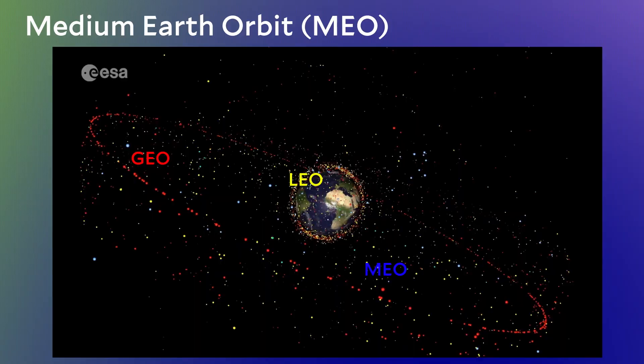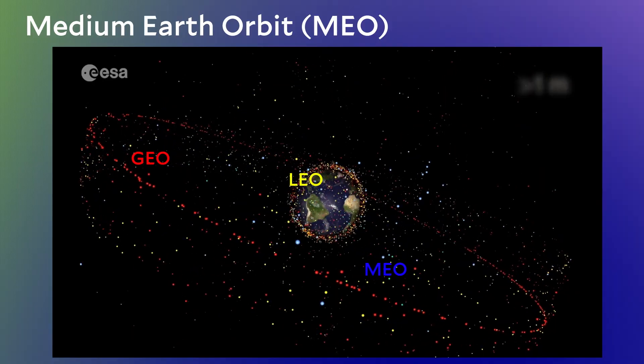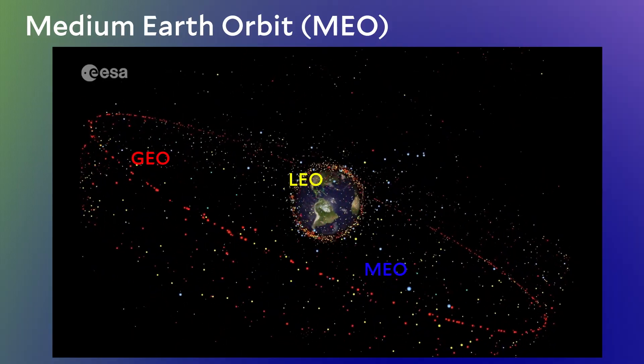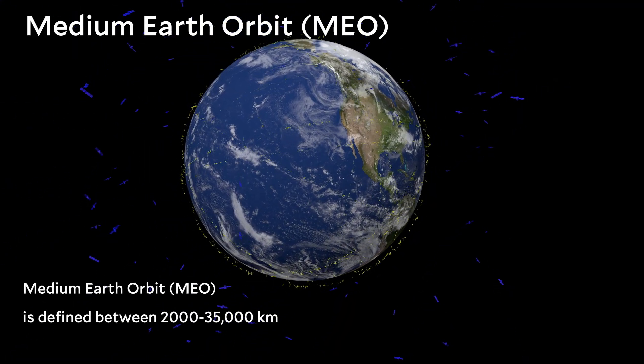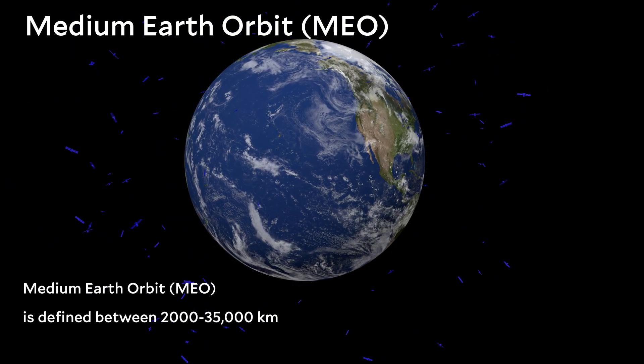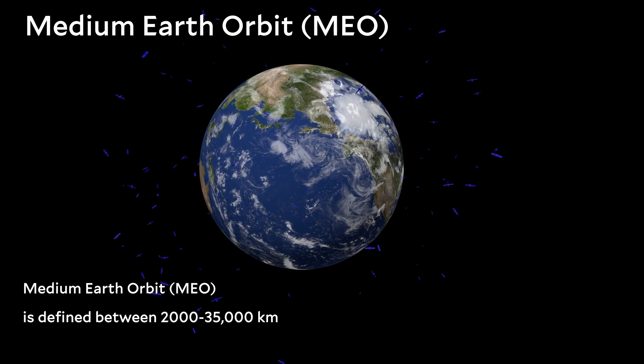Coming back to this animation of satellites orbiting Earth, medium Earth orbits are defined between 2,000 and 35,000 kilometers above the Earth's surface. This is starting to get pretty far away. Instead of a few hours drive in our car that goes straight up, we're talking about hundreds of hours of driving.